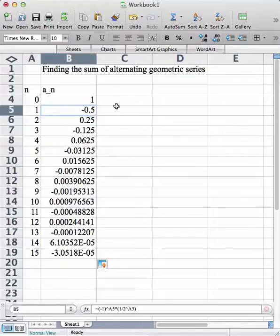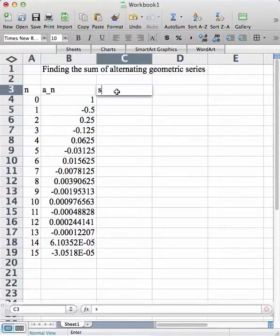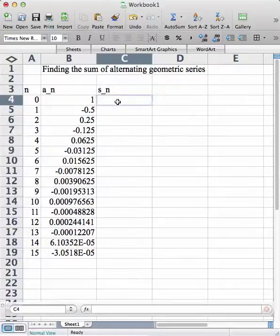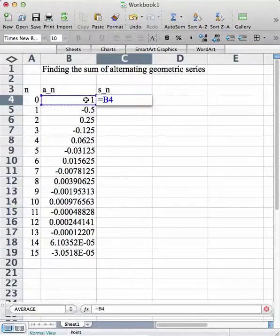Now, when I want to figure out what my partial sums are, I make a column for s sub n. And my first partial sum will just equal what that is. That's easy enough. And that equals 1.